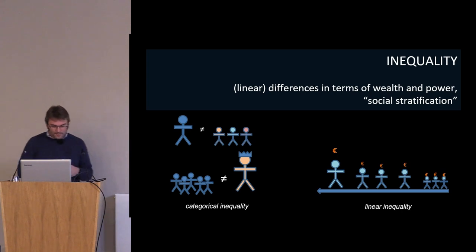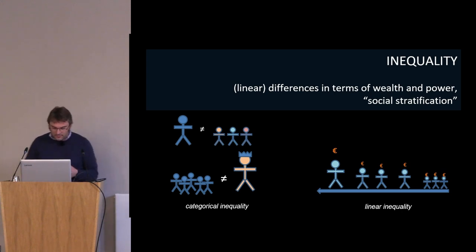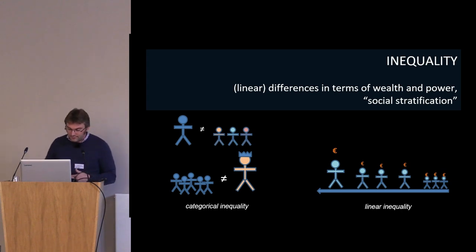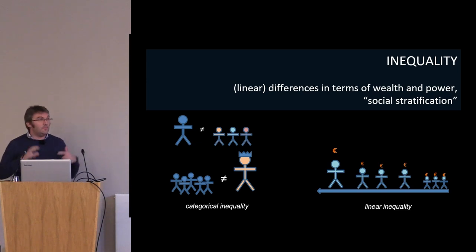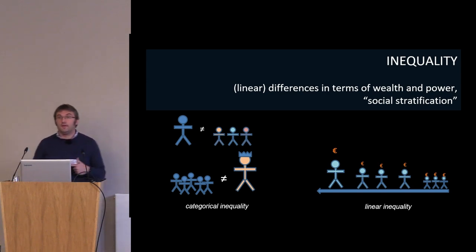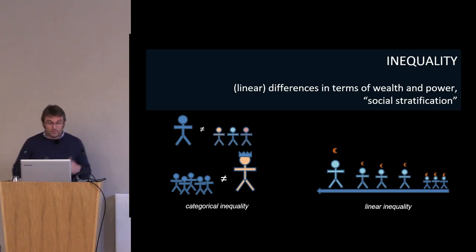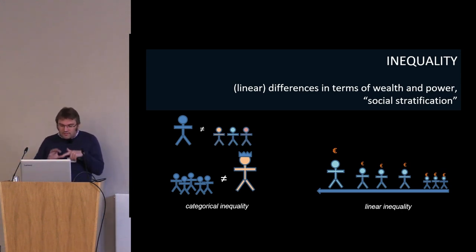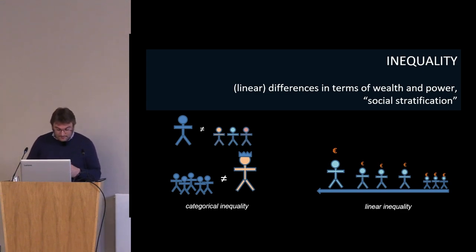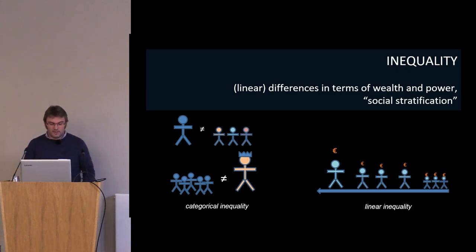Second, inequality. Recent scholarship has created an inequality turn within archaeology, from issues of gender and race to deep-time derivation of Gini coefficients from things like house sizes used to model wealth and power inequality. Here we concentrate on inequality in terms of the wealth-power nexus, which we might traditionally call social stratification, noting that there are many different axes along which inequality can be perceived, and the linear inequality we typically imagine may be rather anachronistic.